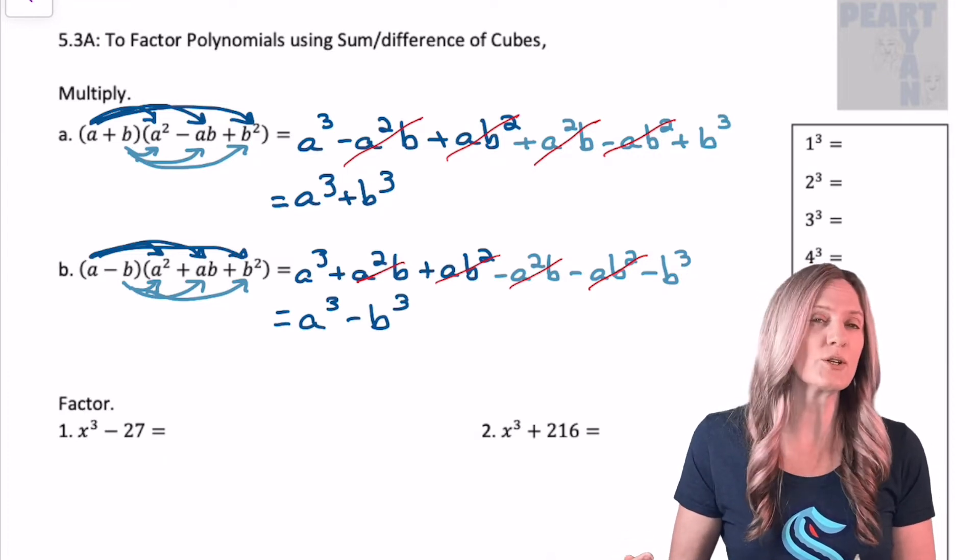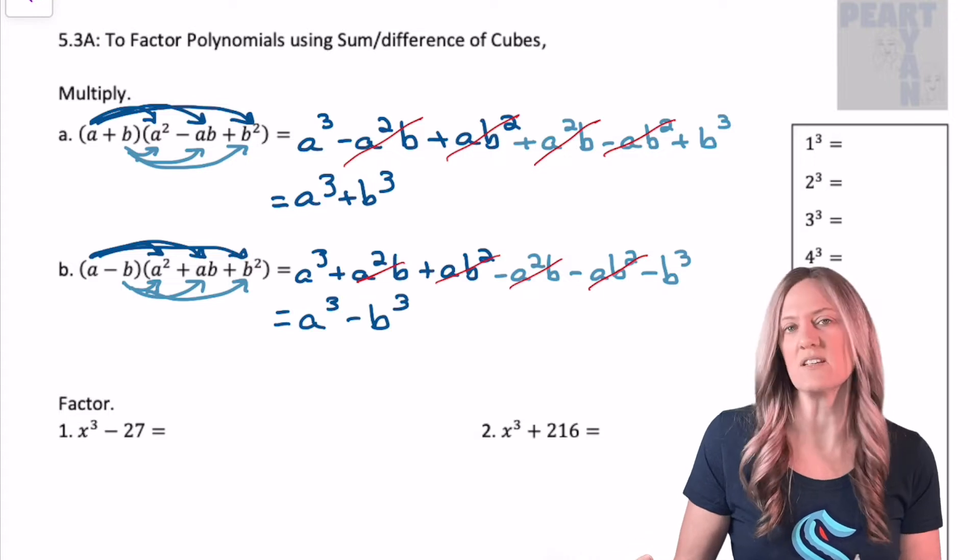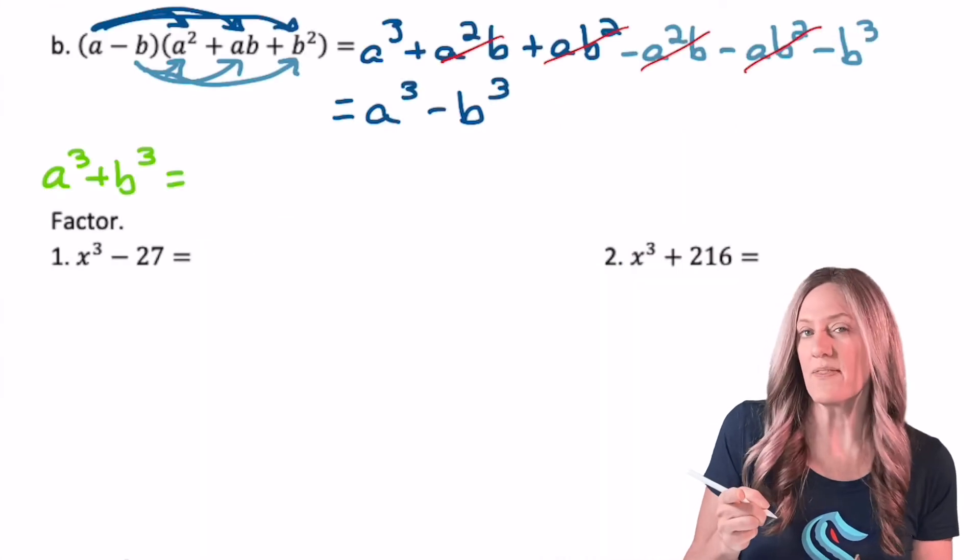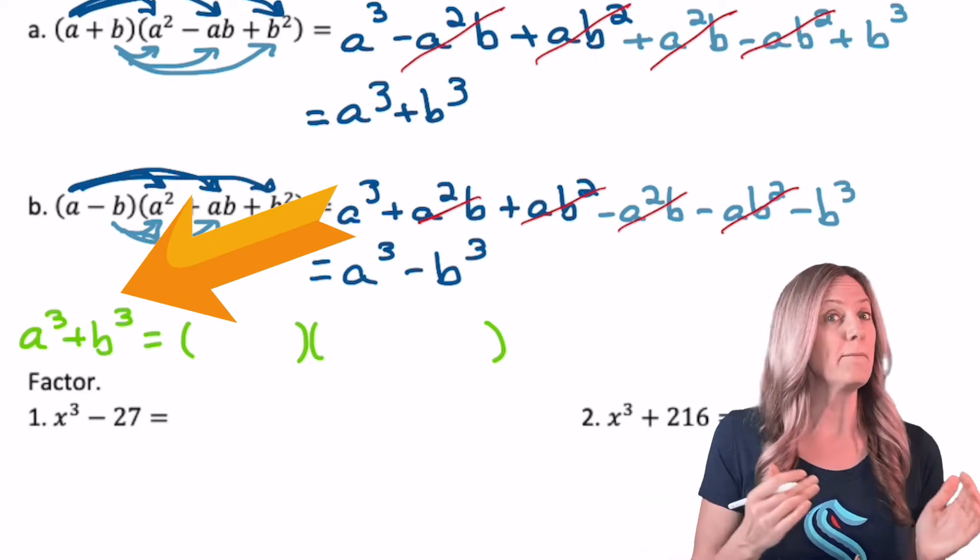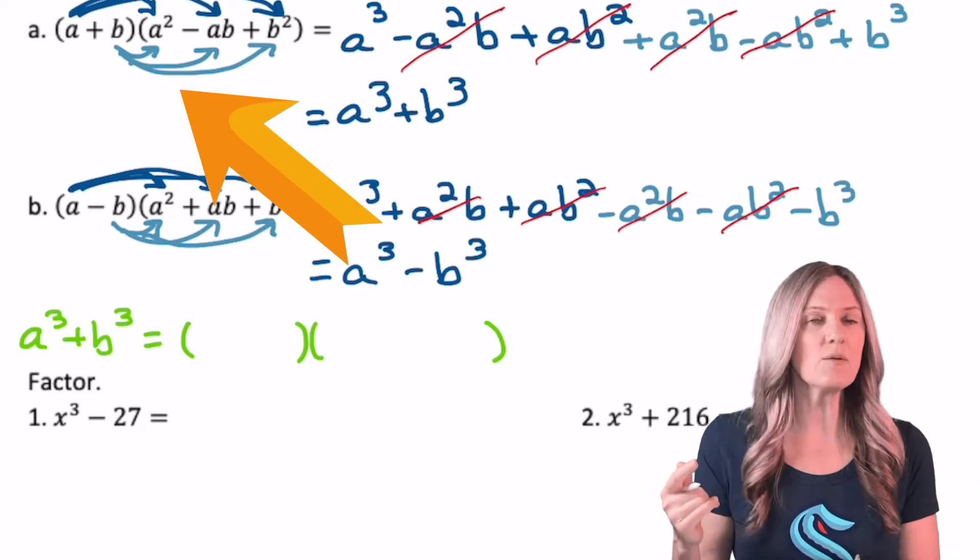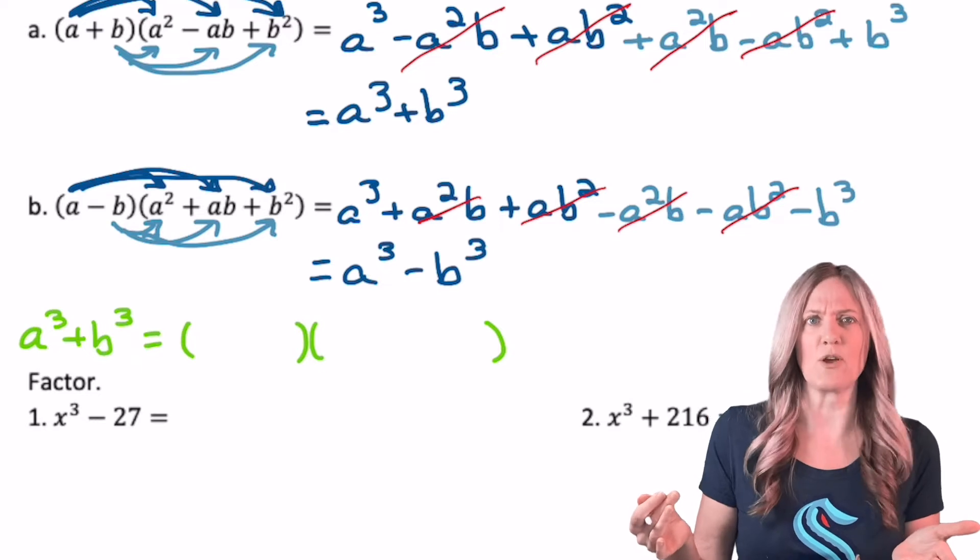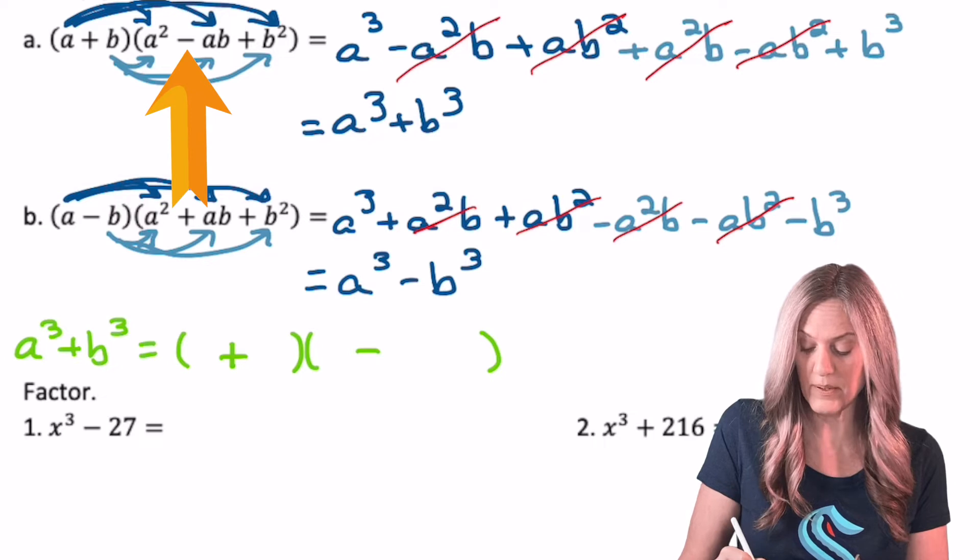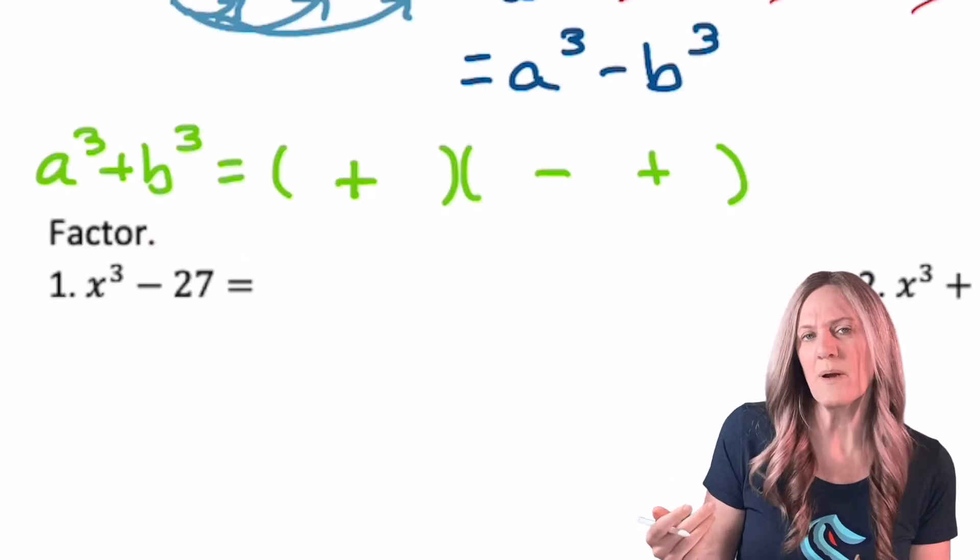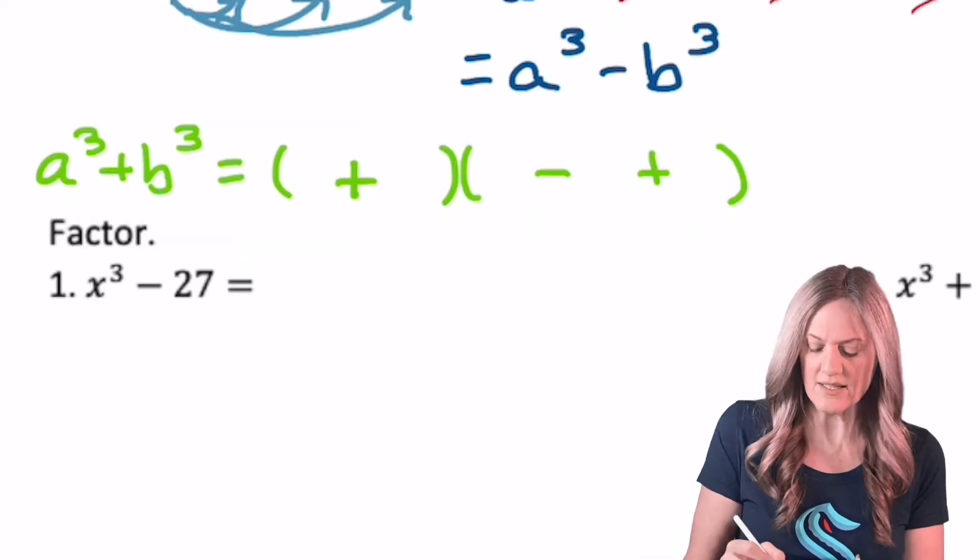How can we use this to learn to factor a sum and difference of cubes? Let's look at the pattern. So if I have a cubed plus b cubed, we know it'll be a binomial times a trinomial. Then we just have to figure out what signs go in the binomial and trinomial. From above, I know it's a plus, and then a minus, and a plus.